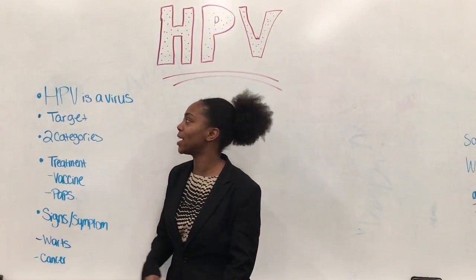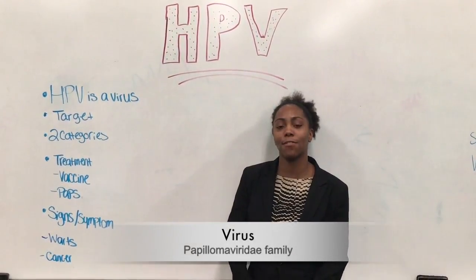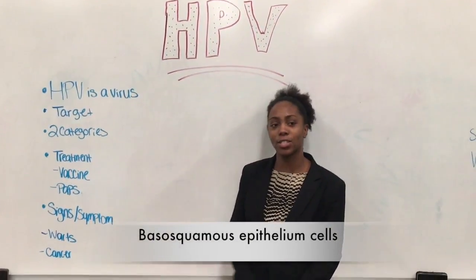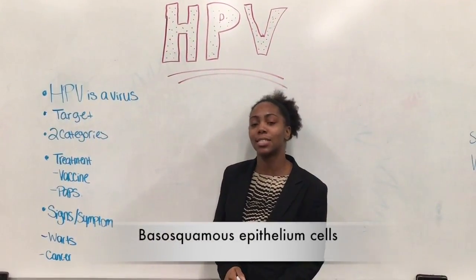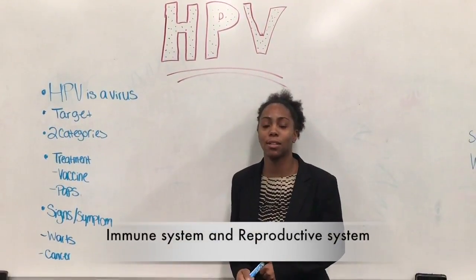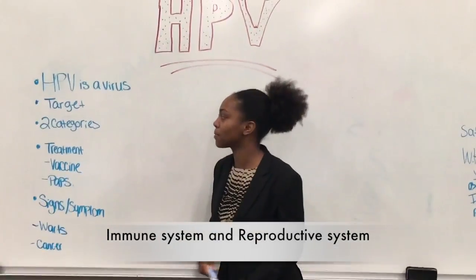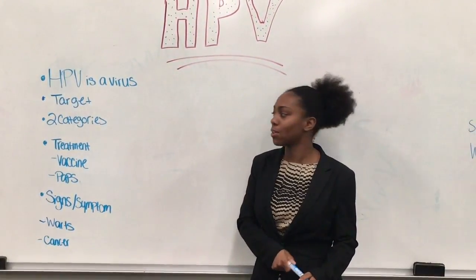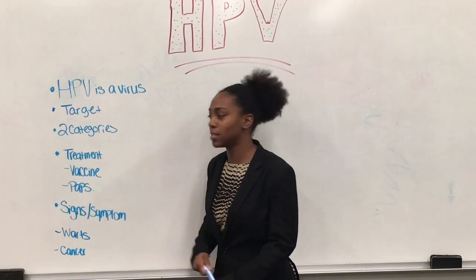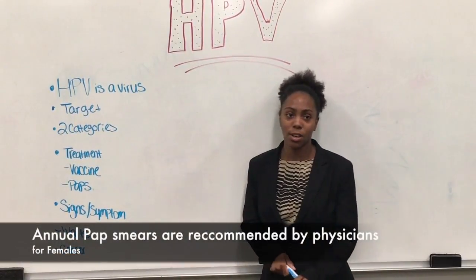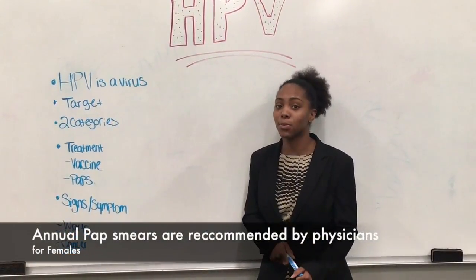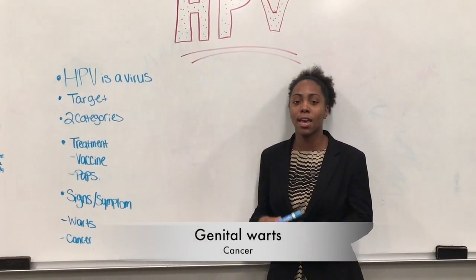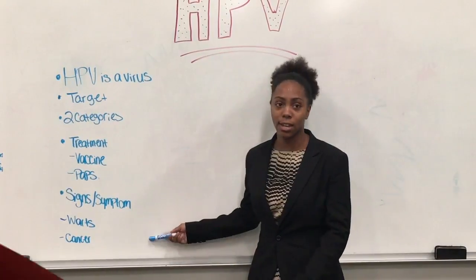To summarize: HPV is a virus that comes from the papillomaviridae family. It affects the basal squamous epithelium cells and also affects the immune system and the reproductive system. HPV has two categories — high risk and low risk. Some treatments for HPV include vaccines and pap smears. Ladies, don't forget to get your pap smears once a year. Some signs and symptoms are warts of the genitals, warts of the hands and feet, and cancer.